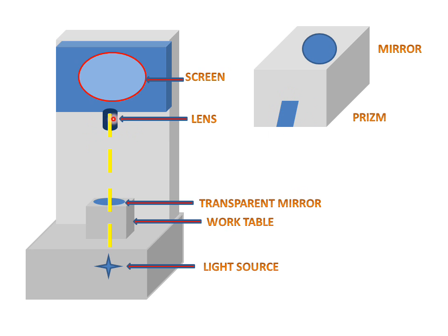Light will go to the prism and the prism will reflect it to the mirror. Then the mirror will reflect it to the screen and at last we will get the object image.